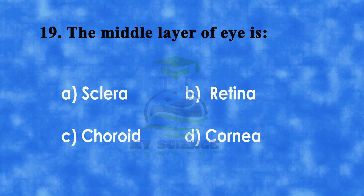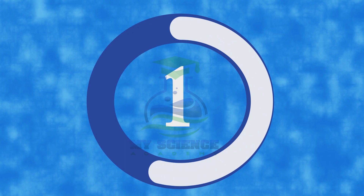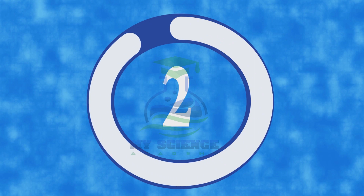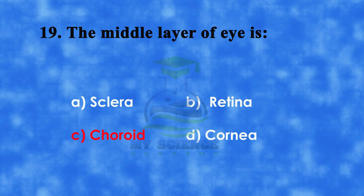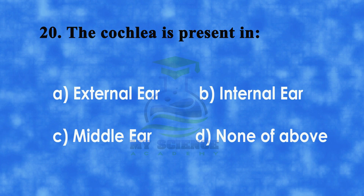Number 19: The middle layer of eye is. A: sclera, B: retina, C: choroid, or D: cornea. And correct answer is C: choroid.